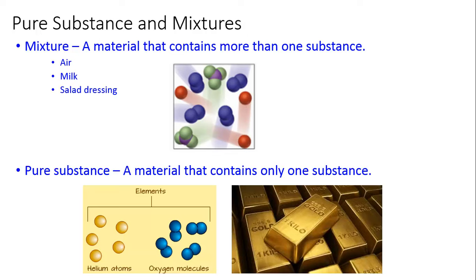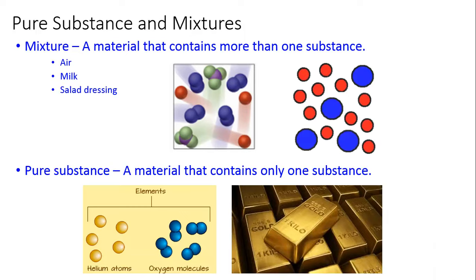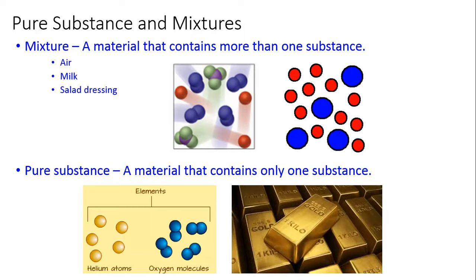Here's a picture that shows different substances flying around in a gas. A pure substance is a material that contains only one substance. The example in the picture is solid gold.